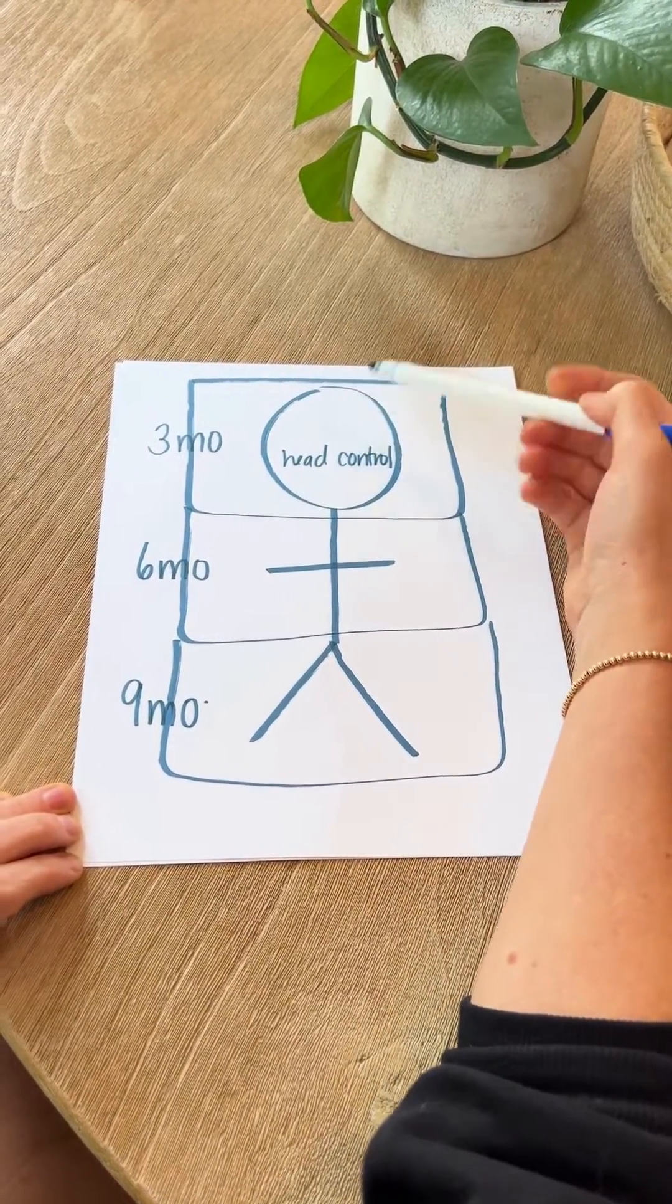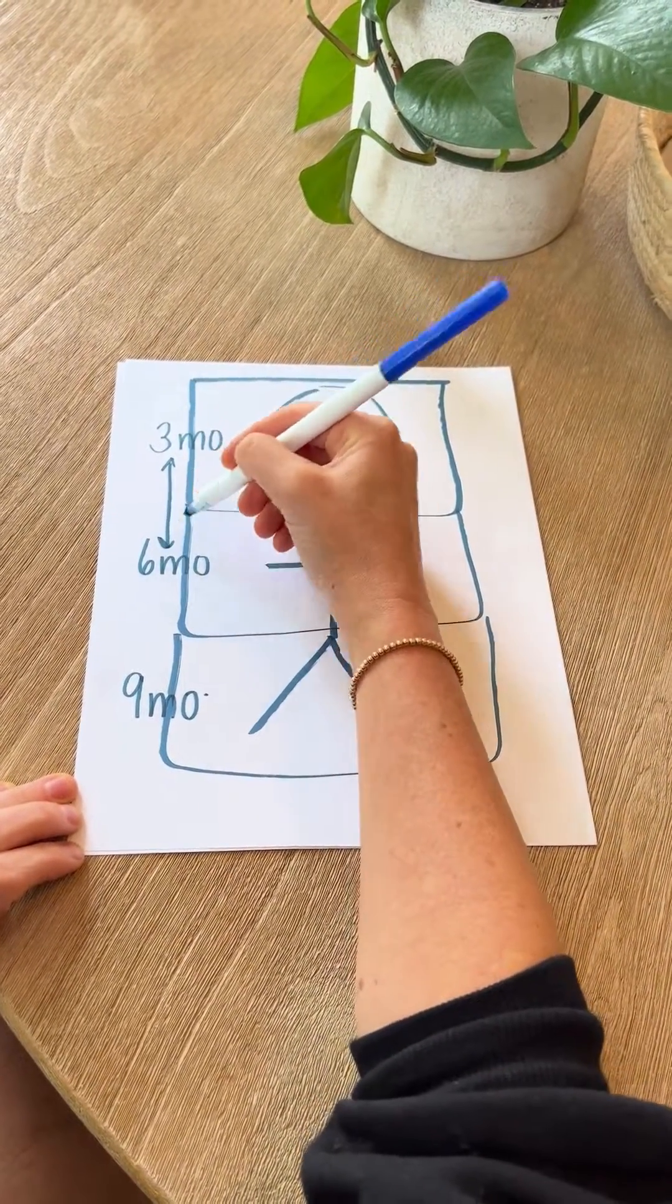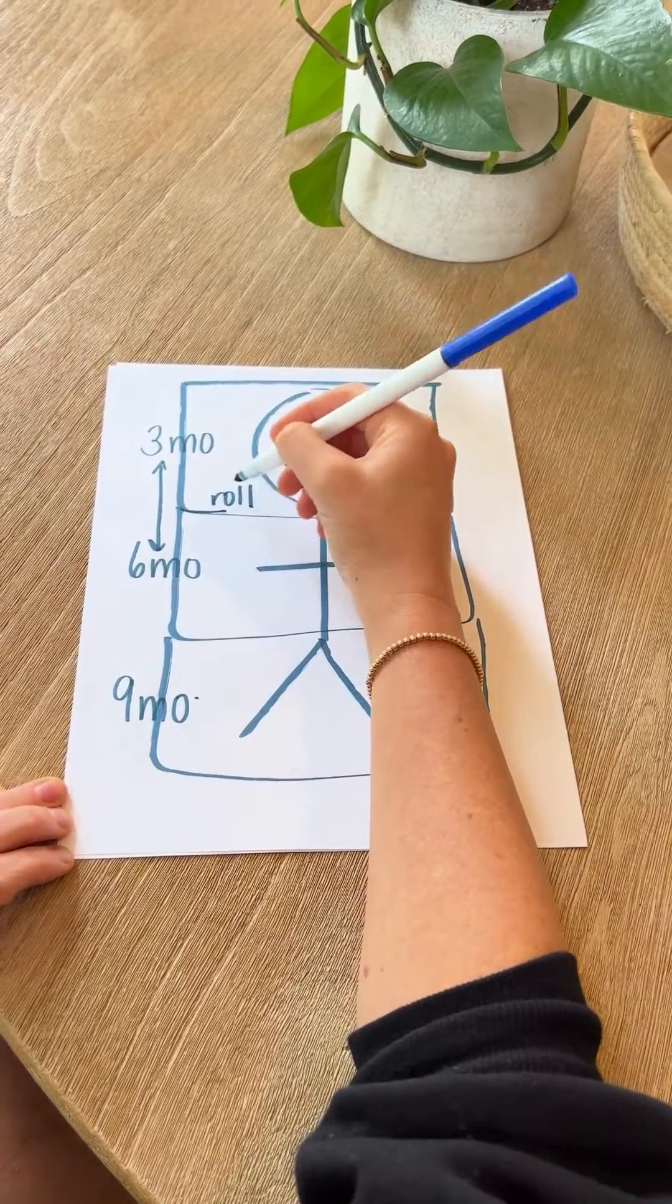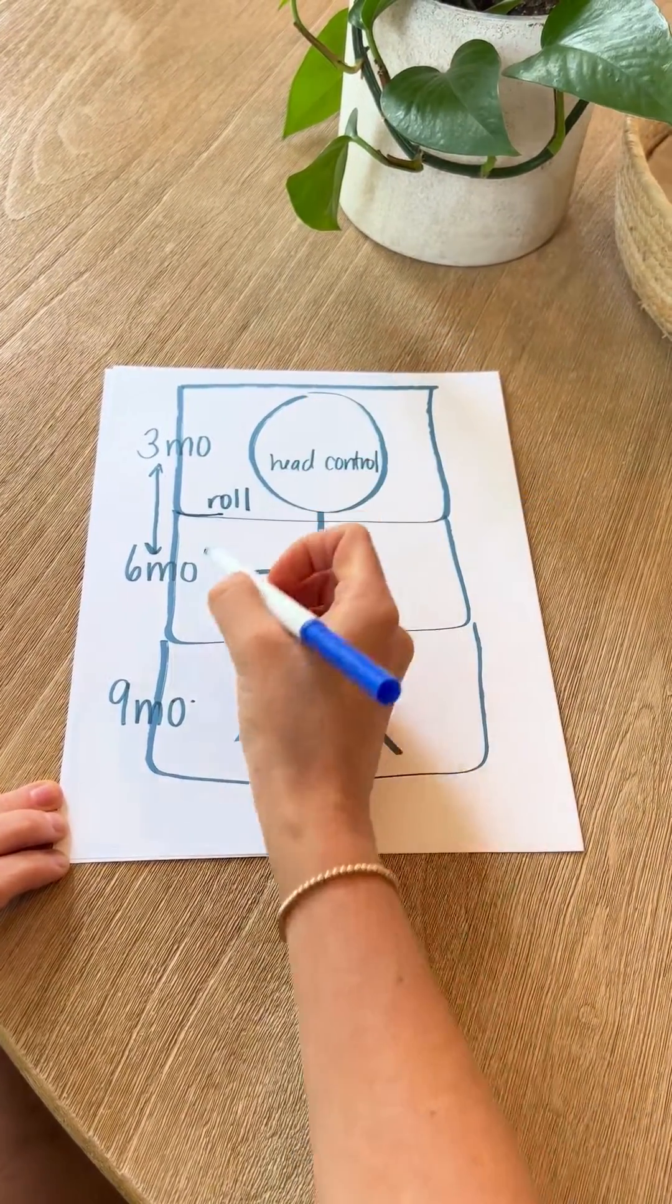Again, at three months that's head control. The next line is going to be around between three to six months. This is when rolling happens.